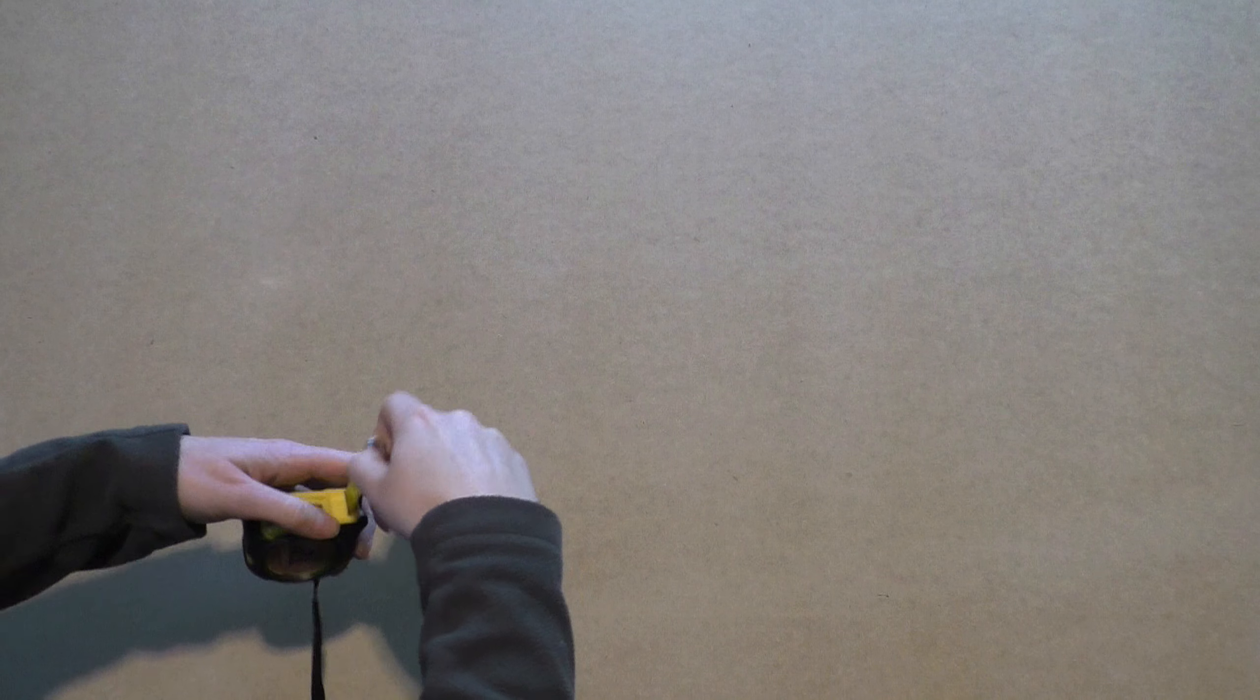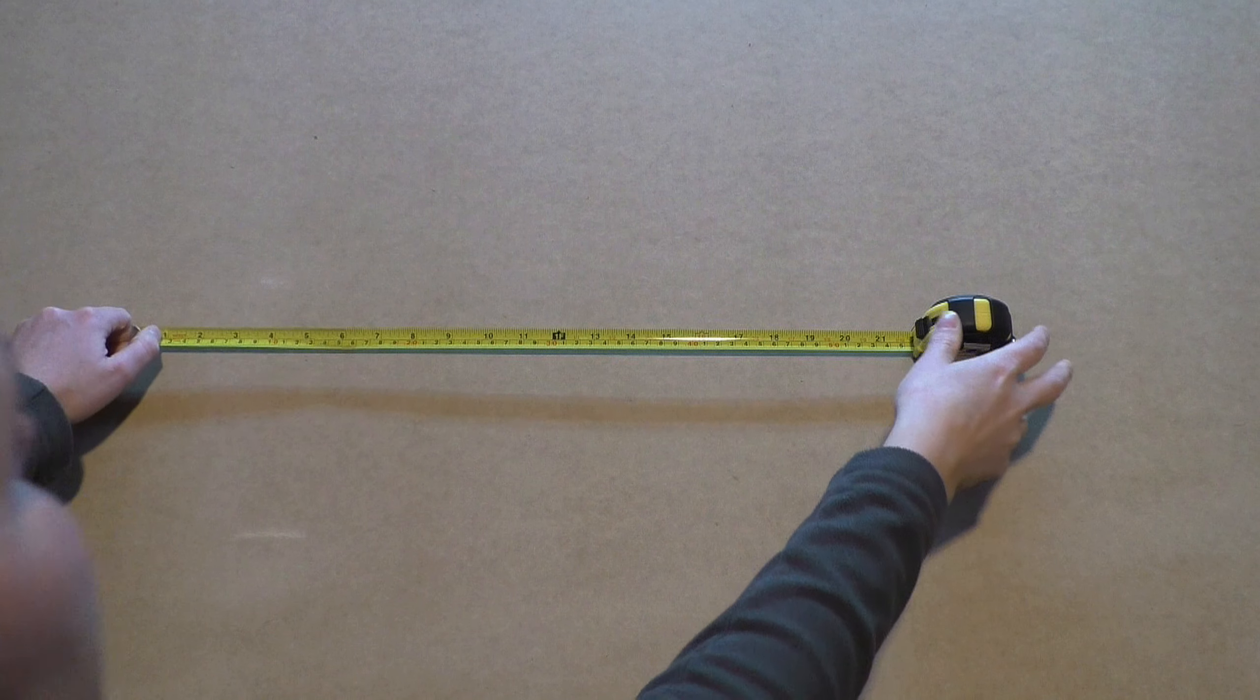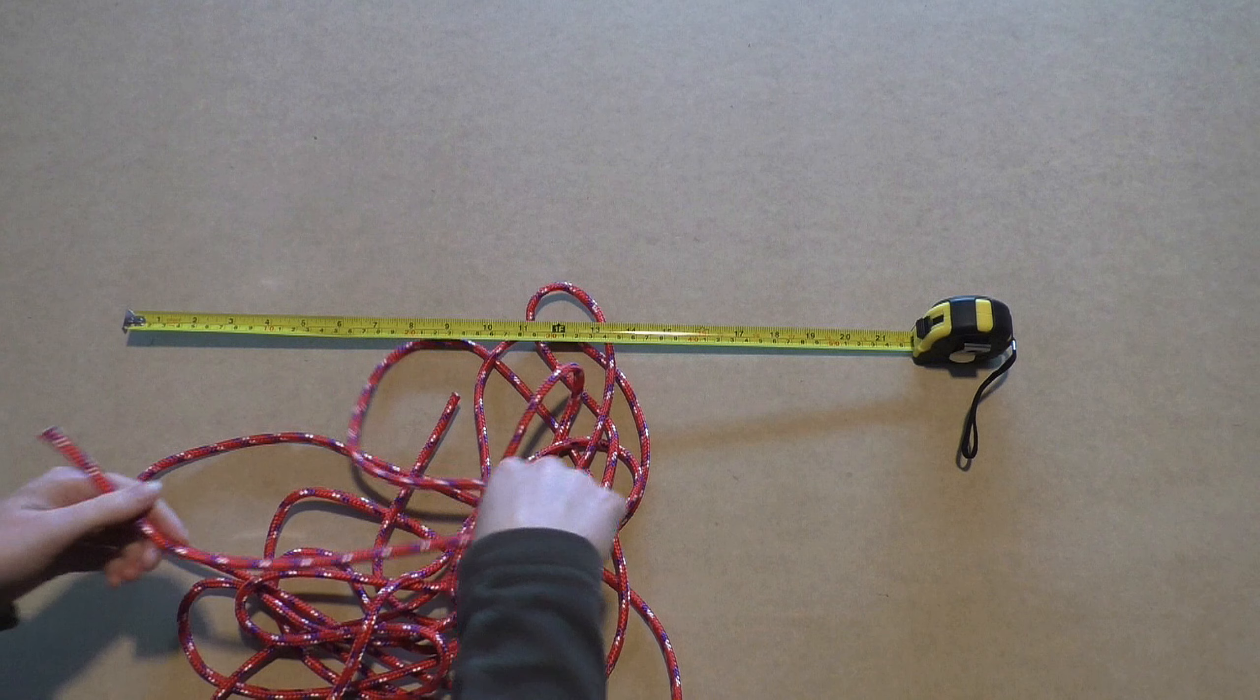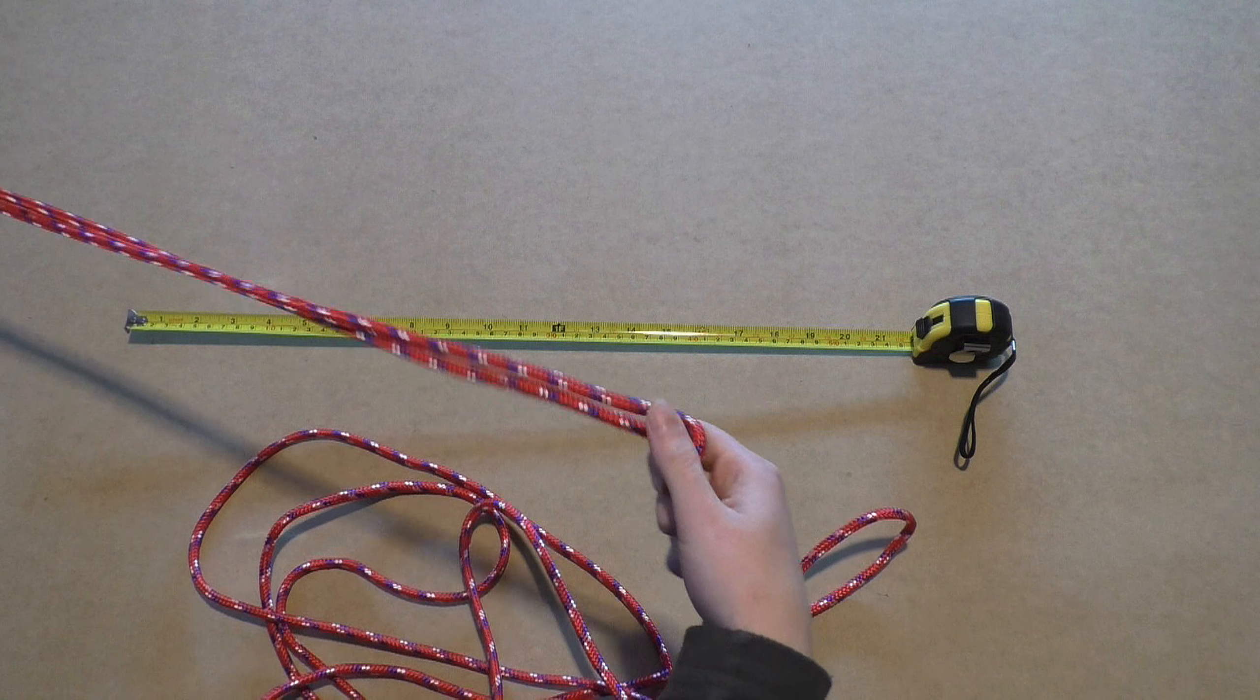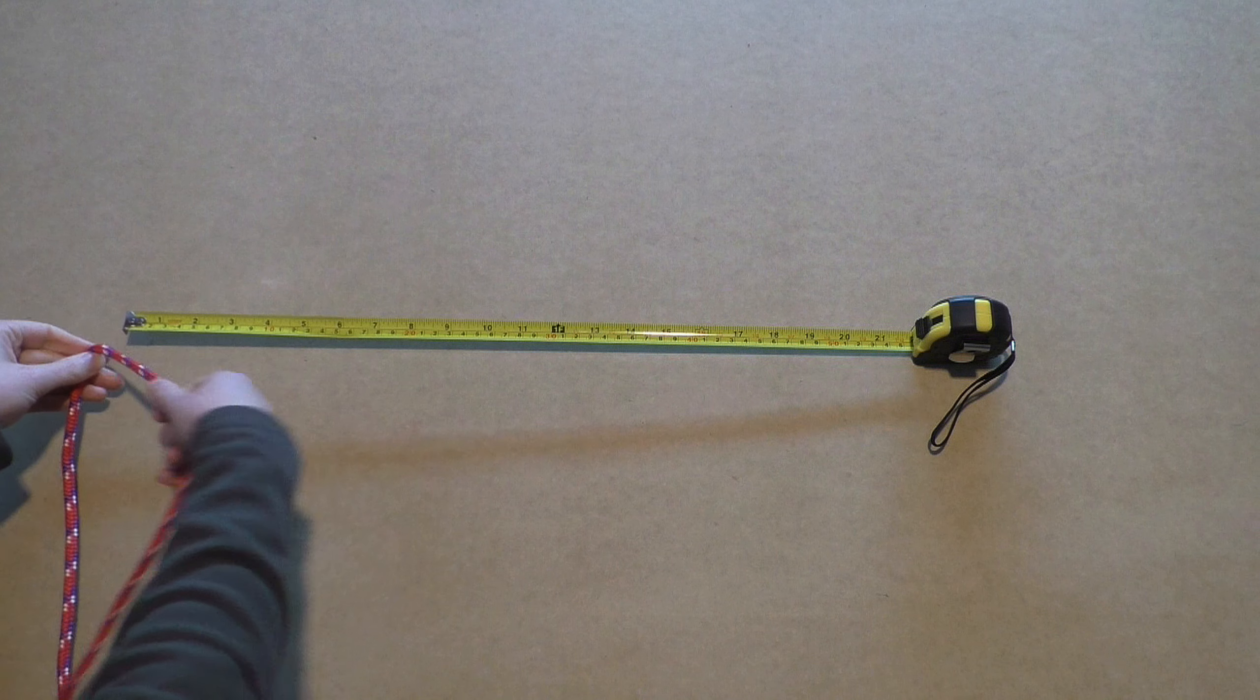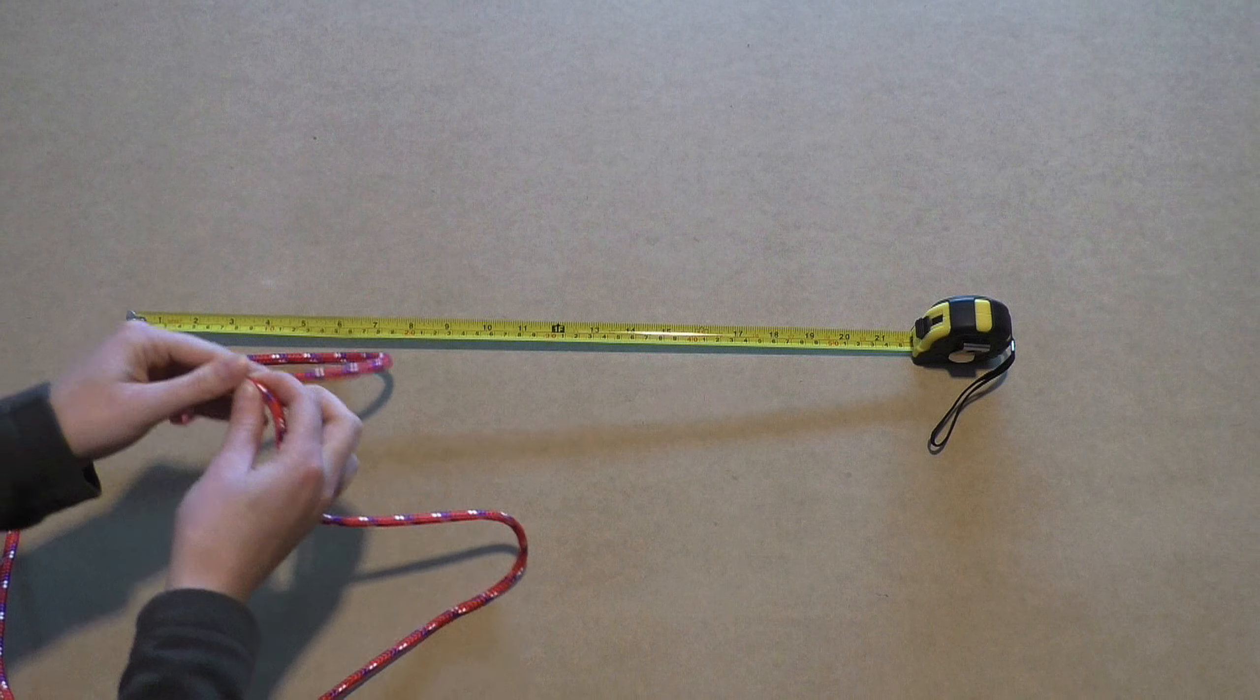I always prepare the tape measure by rolling it out to at least 50cm so that you don't have to grab it all the time. Find the middle of the rope and lay the middle alongside the tape measure. Move your hand 50cm from the middle. This will be your new middle.